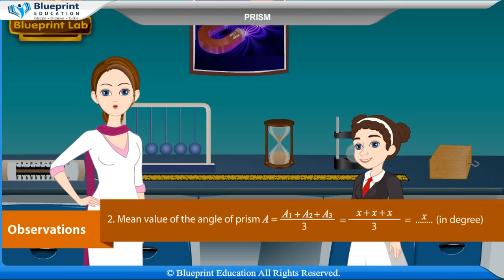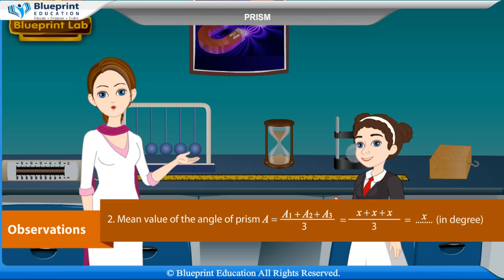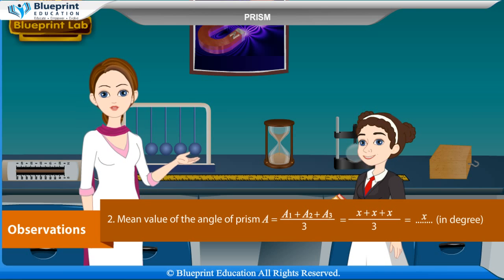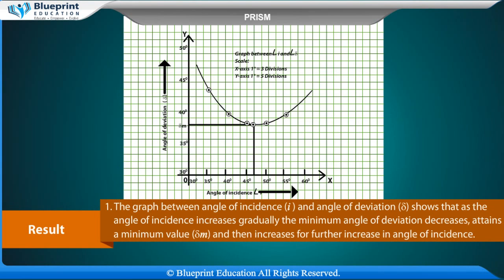The mean value of the angle of prism A = (A1 + A2 + A3) / 3. Table for angle of incidence and angle of deviation: Serial number, angle of incidence (i), angle of deviation (δ). Values recorded at angles of incidence: 35°, 40°, 45°, 50°, 55°, 60°.